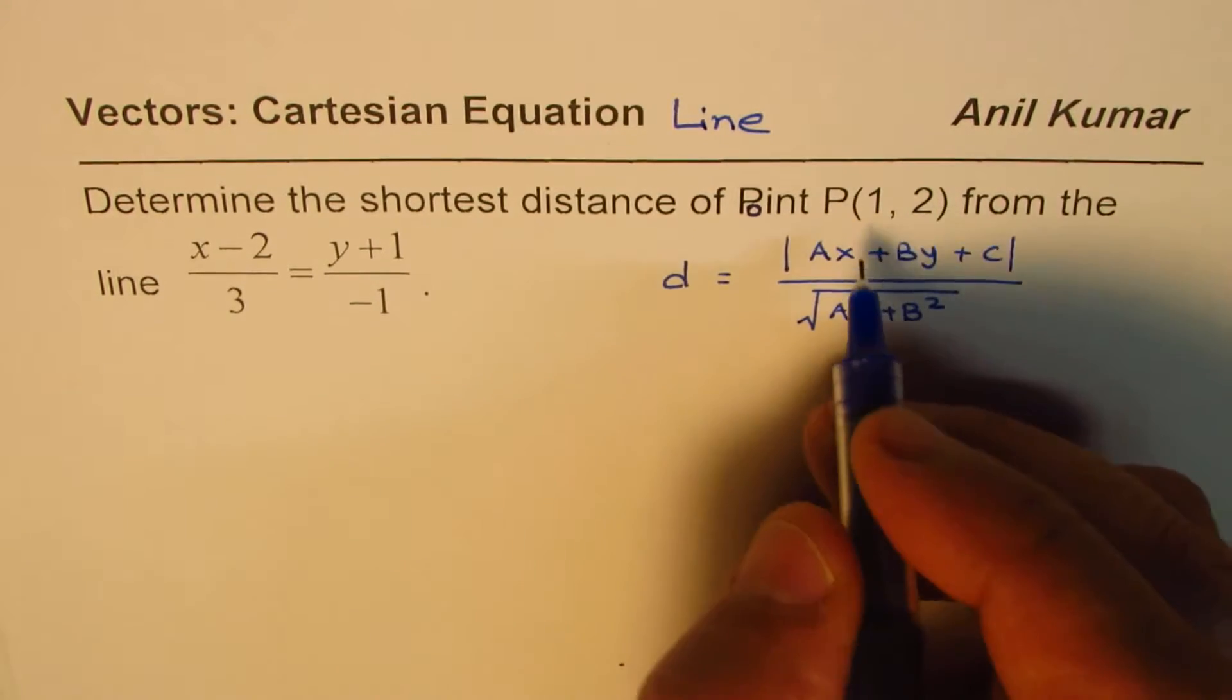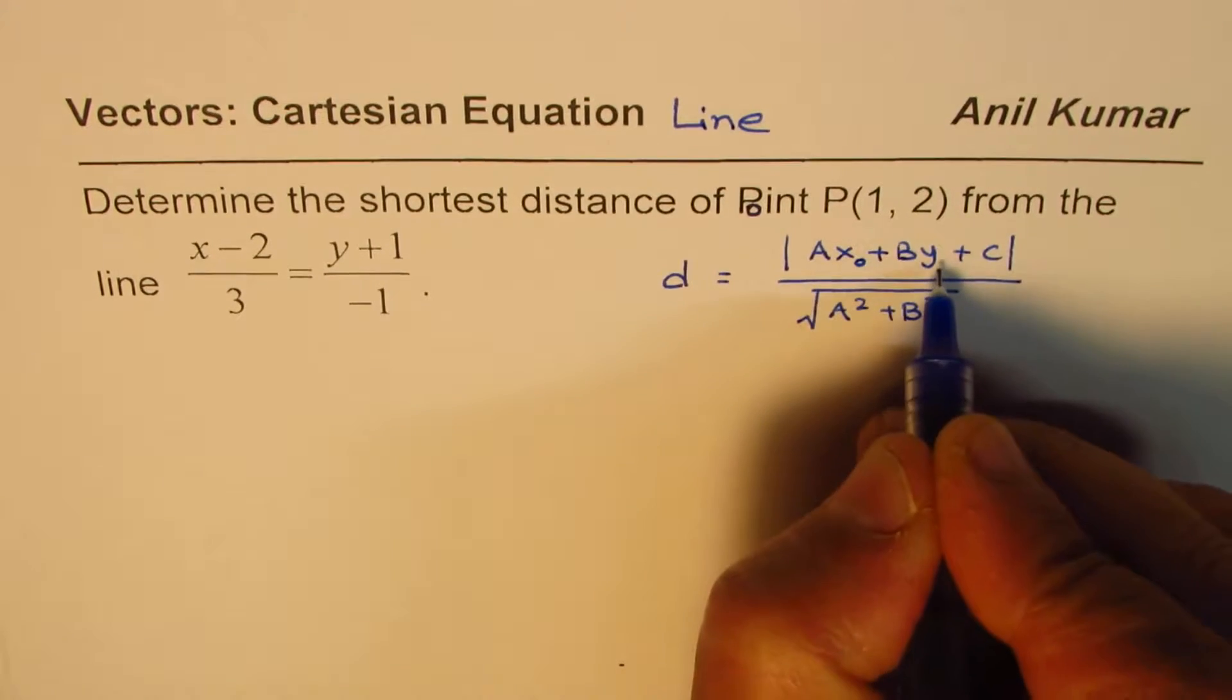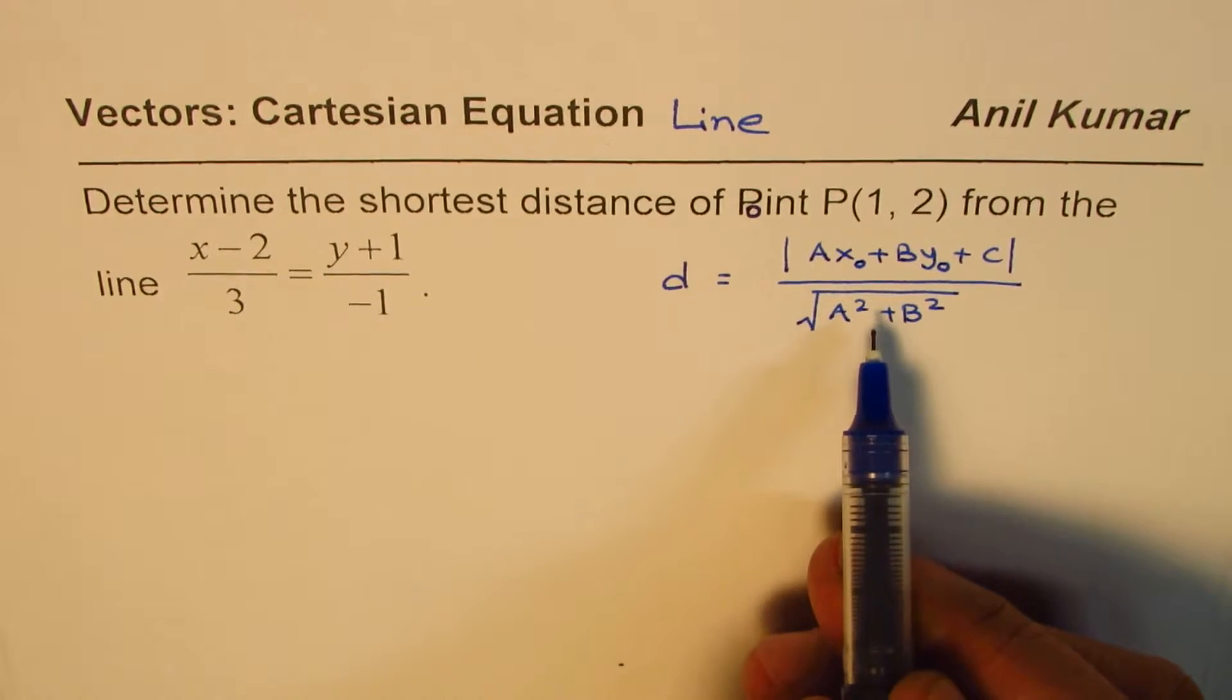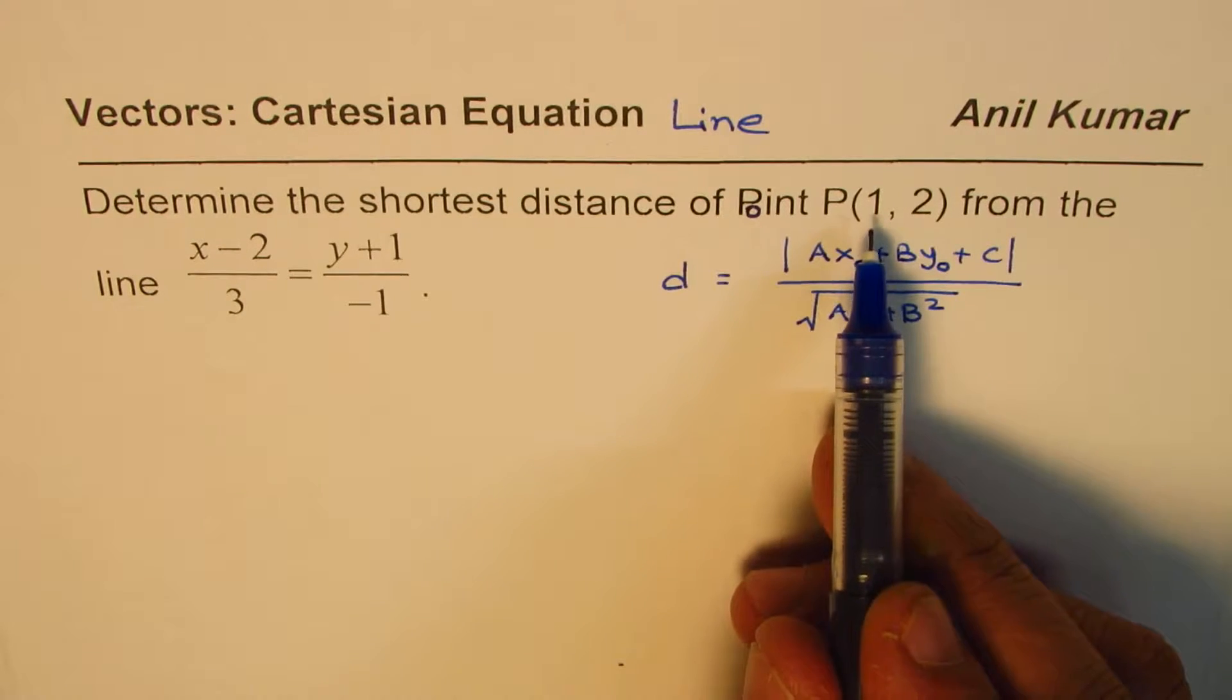Where x and y are the given values, we normally write this as x₀, y₀, saying that substitute the value of the point. So this formula gives you the shortest distance from a point to the line.